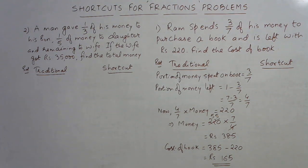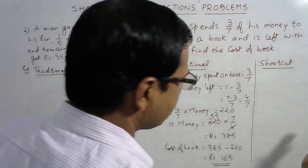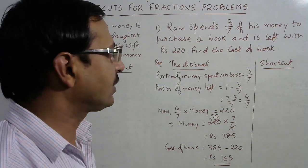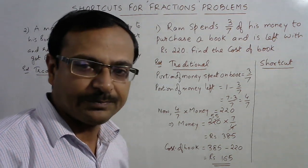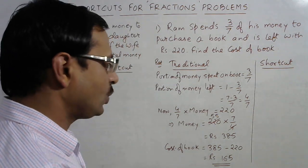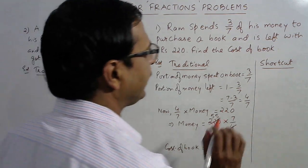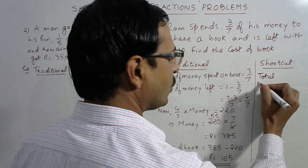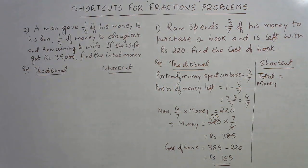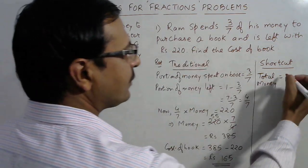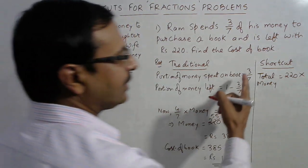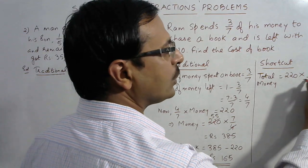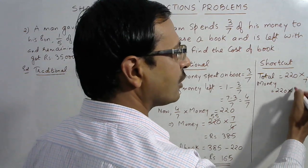Now let's see how we can solve this through the shortcut and how many steps we can skip. For competitions this method will suit you more. Whenever these types of questions come in competitions, do not follow all those steps. You can directly find the total money. The total money is: the amount left (₹220) multiplied by the reciprocal of the fraction spent, with the difference of numerator and denominator in the denominator.